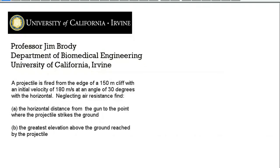Here's the problem: a projectile is fired from the edge of a 150-meter cliff with an initial velocity of 180 meters per second at an angle of 30 degrees to the horizontal. We neglect air resistance. The questions are: Part A, find the horizontal distance from the gun to the point where the projectile strikes the ground, and Part B, find the greatest elevation above the ground reached by the projectile.